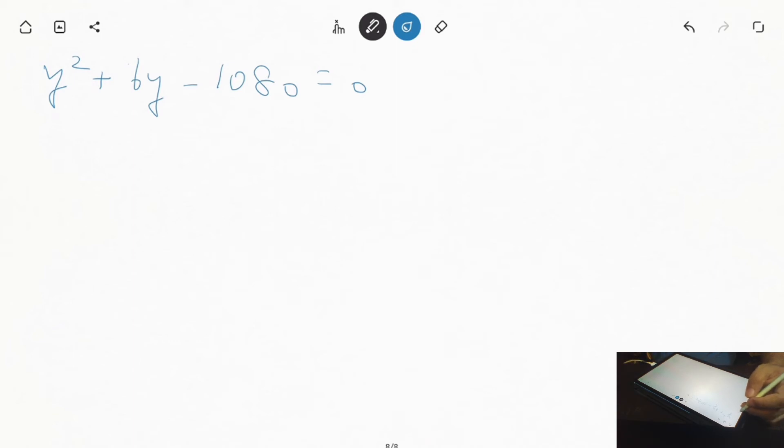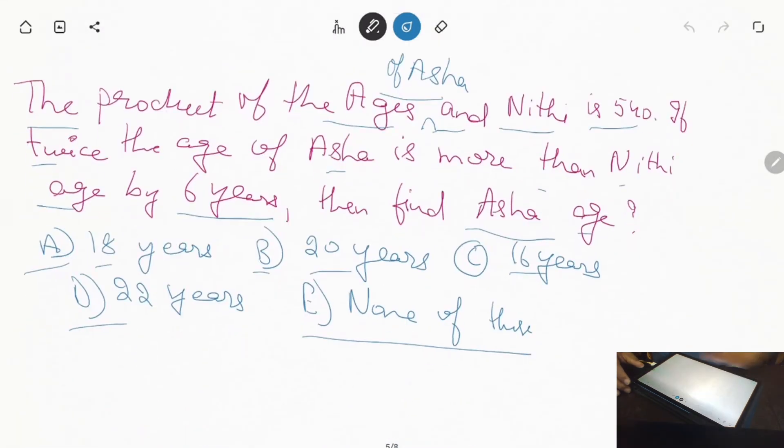We get Y² + 6Y - 1080 = 0. When we factor, Y minus 30 multiply by Y plus 36 equals zero.